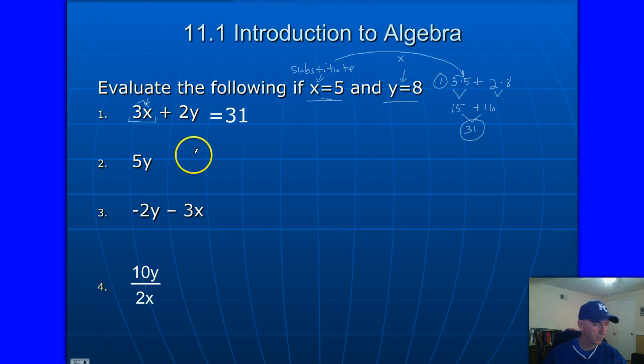Number 2 says 5Y. So that means 5 times Y, which was 8. And 5 times 8, that is equal to 40. Right there. So that is, again, this is substituting and evaluating expressions here is what we're doing.